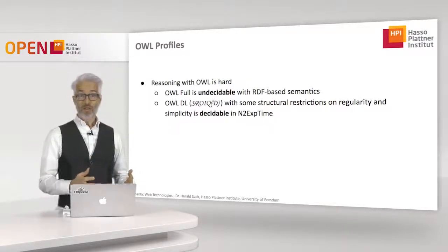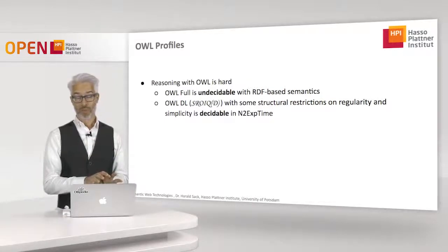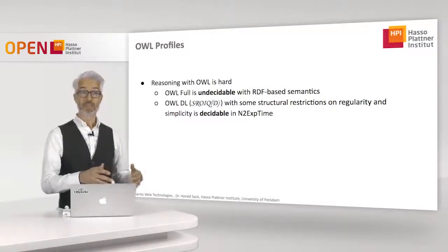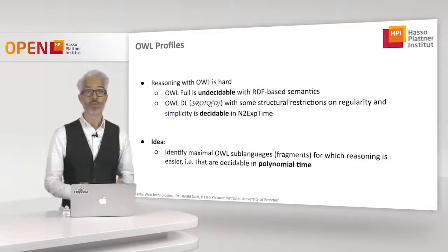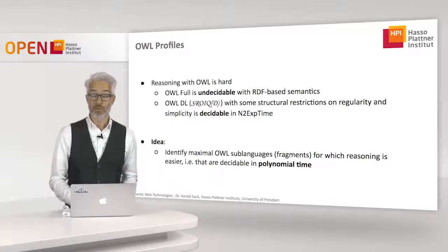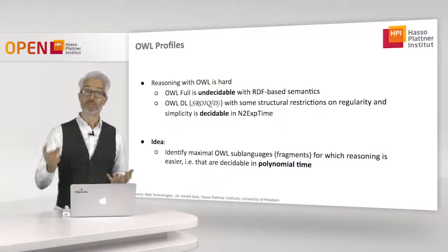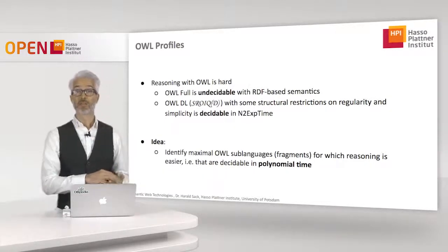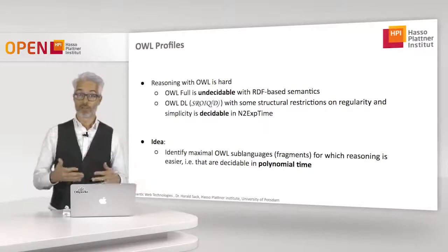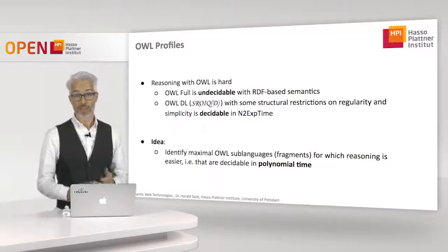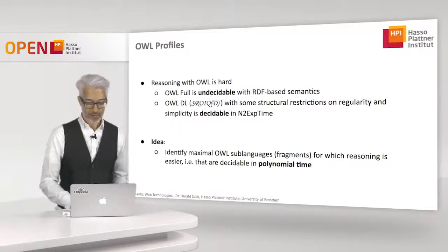To be of practical use, one tries to find subsets of the language that are sufficiently expressive but much faster. The idea is to identify maximal OWL sub-languages or fragments for which reasoning is decidable not in exponential time but even in polynomial time — similar to a traditional non-optimized sorting algorithm running in quadratic time. To achieve this, we have to remove certain parts of the OWL language.